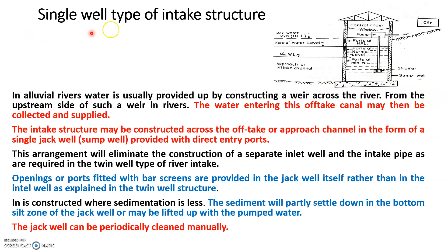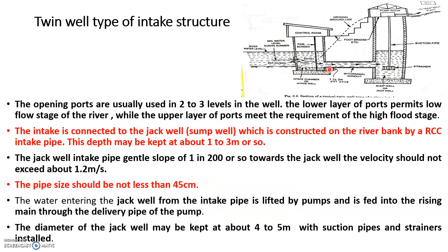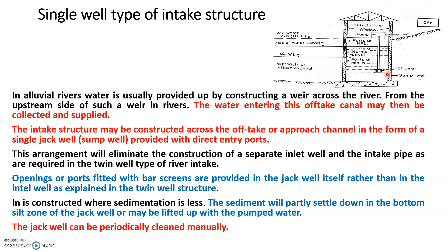Next is the single tower intake, also called single well type intake structure. In the previous twin well case there was an additional jack well structure, but in the single well type there is no additional structure. In the twin tower intake, one well is in the river bed and the other is on the shore — the jack well is always on the shore. With the single type, it is constructed near a weir where the water is stored and the water level is raised. It is generally constructed near weirs where the water is collected and taken to canals or conduits.